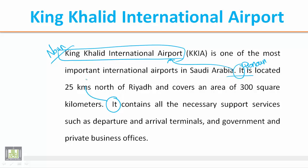Again, another pronoun 'it' refers to the same noun — King Khaled International Airport. One thing that makes it easier to find the noun for a pronoun is that there is what we call agreement in number between the noun and the pronoun. بعبارة أخرى، إذا كان الضمير مفرداً فيجب أن يكون الاسم الذي يعود عليه أيضاً مفرداً.